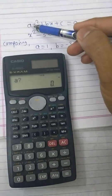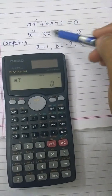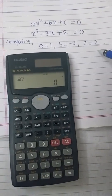By comparing, we get a = 1, b = -3, and c = 2.